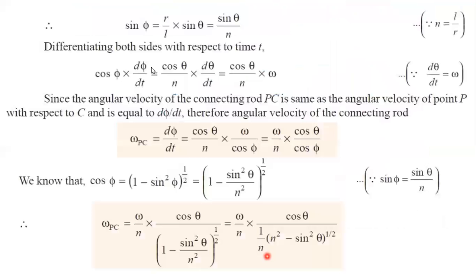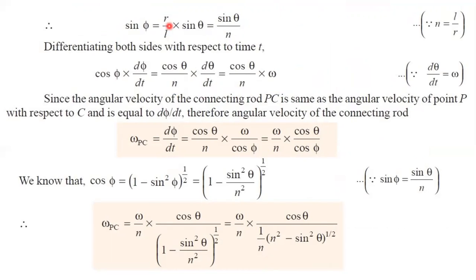Now equating the vertical components, l sin phi equals r sin theta, so sin phi is equal to r divided by l times sin theta. Since n equals l by r, we can write r by l as 1 divided by n. So sin phi is equal to sin theta by n. Now I am going to differentiate both sides with respect to time t.